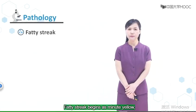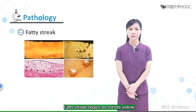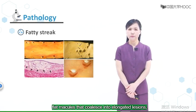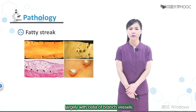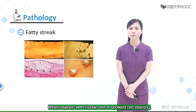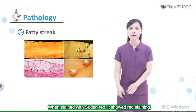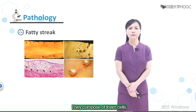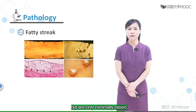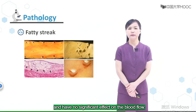Fatty streaks begin as minute yellow flat macules that coalesce into elongated lesions, largely at the ostia of branch vessels. Once stained with Sudan red, they show red staining, composed of foam cells, but are only minimally raised and have no significant effect on blood flow.